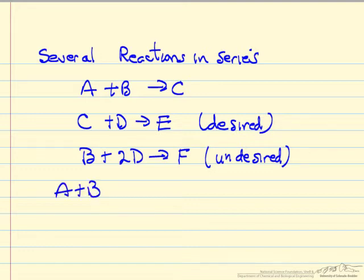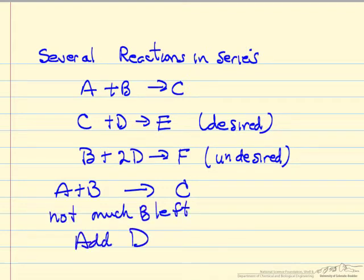if we just add A and B, and we start out with a reactor containing just A and B, and we let it react to form C. So there's not much B left. And then we add D. So after most of B is reacted, we add D. It can react with C. It's not going to react very much with B because there's not much B left.